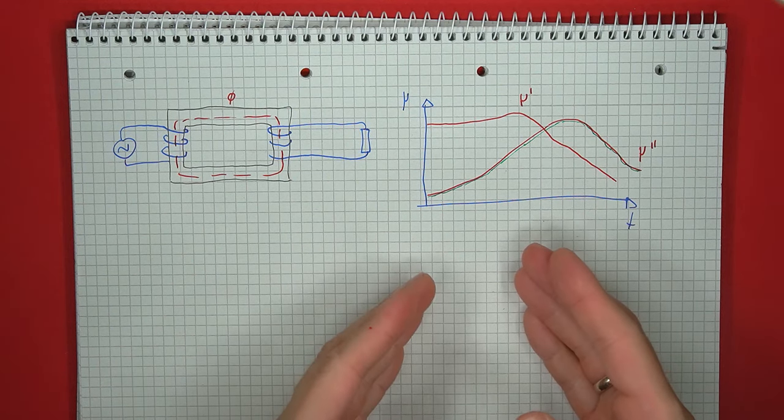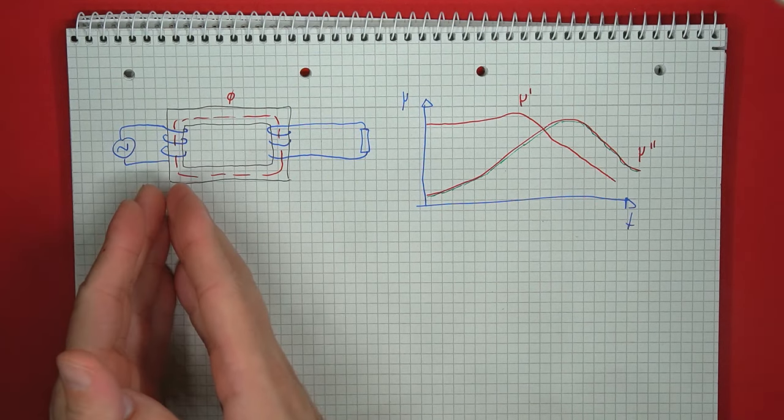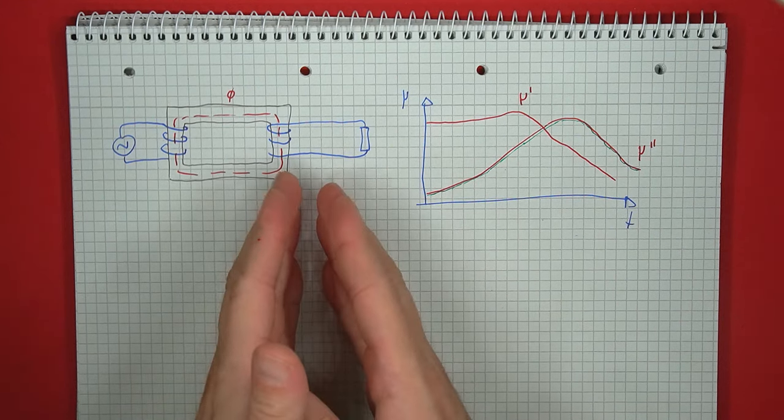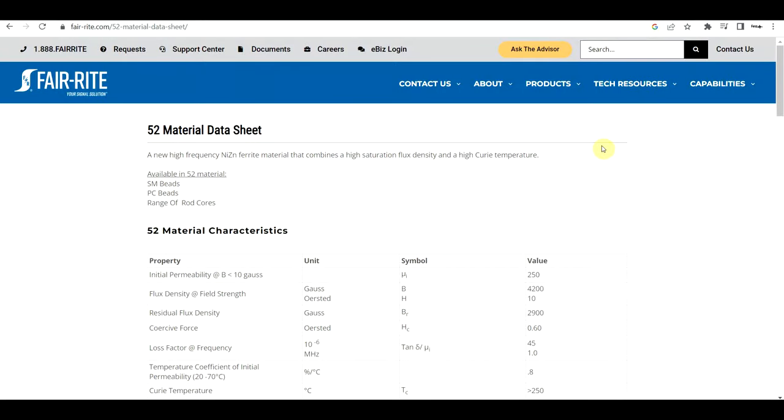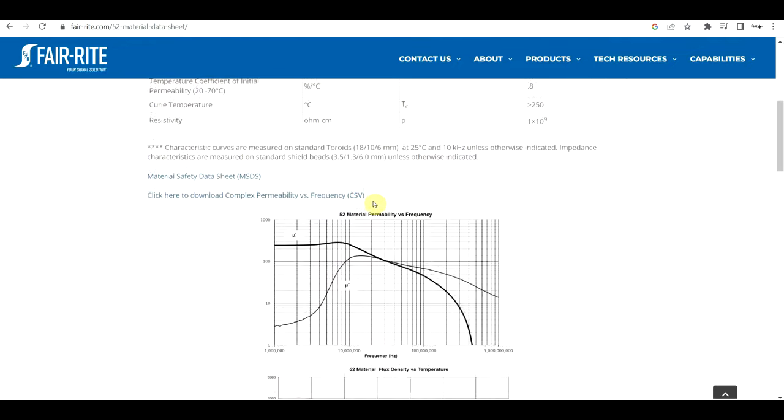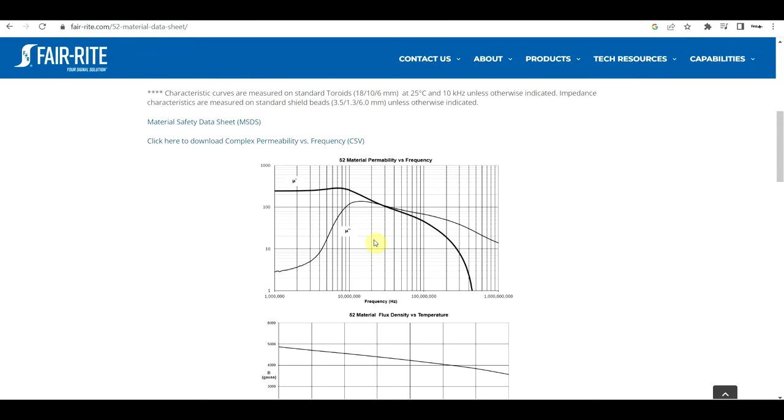This way, the energy that is being put into the core on the primary side can actually be transferred into the secondary, rather than getting wasted as heat. So one magnetic core that I have around is built from the Type 52 material from Ferrite, which if we look through the datasheet, specifically at the permeability graph, we can see that it can be used as an efficient transformer up to about 2 or 3 MHz, after which the imaginary permeability starts to kick in, and most of the energy that you put into the core will get dissipated as heat.